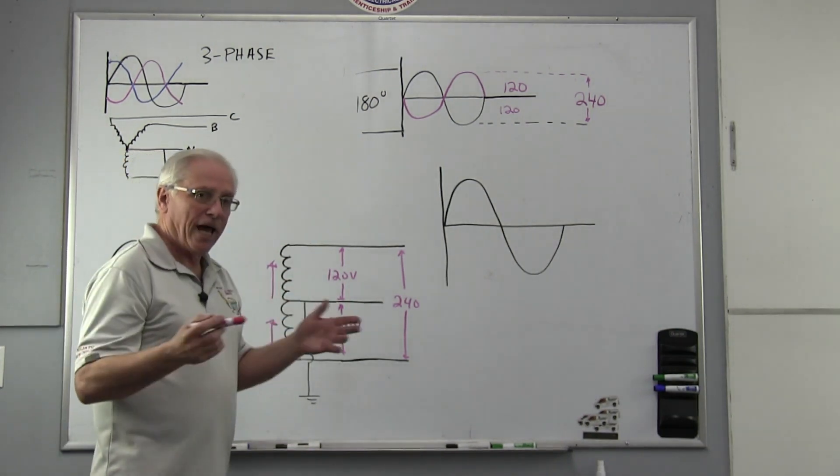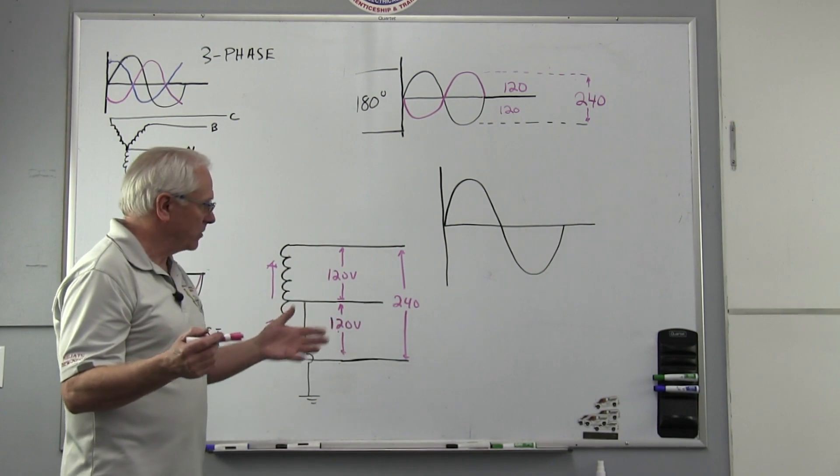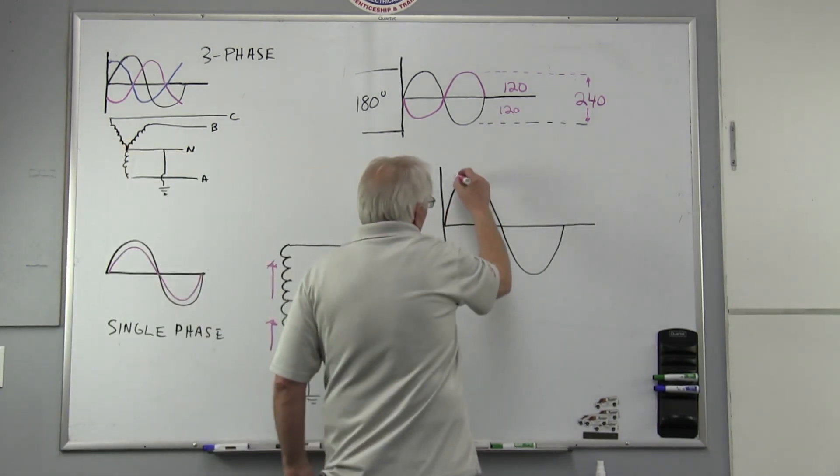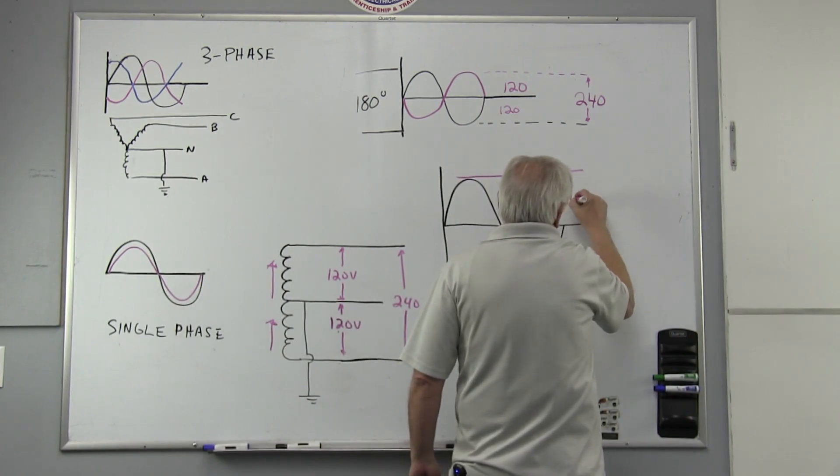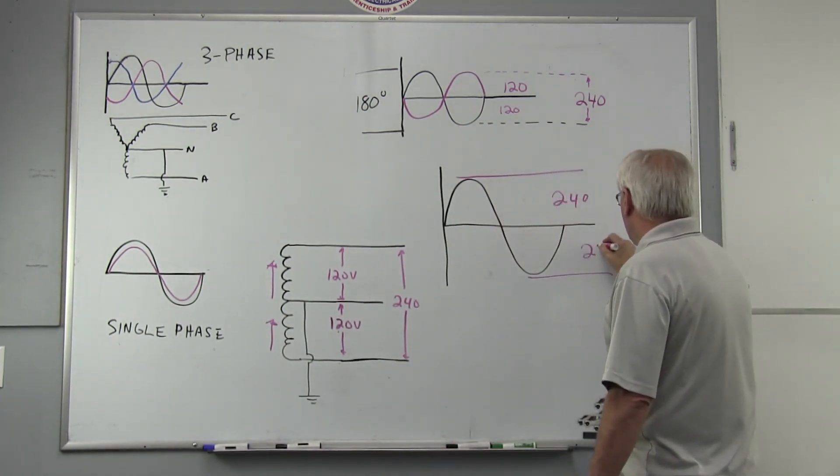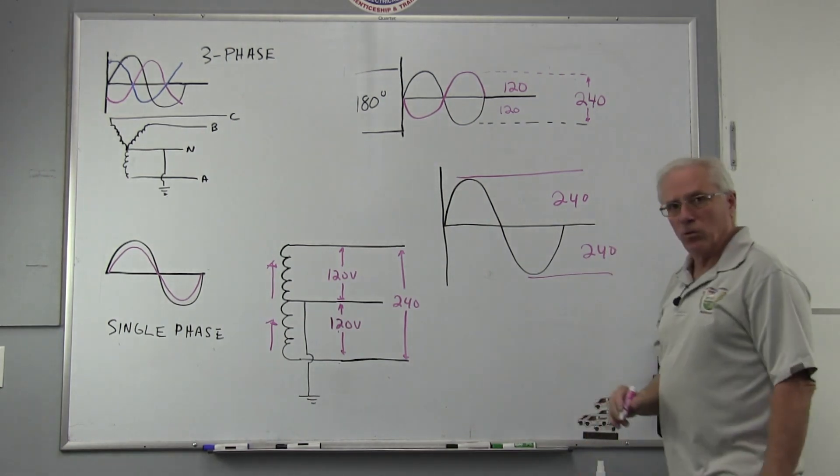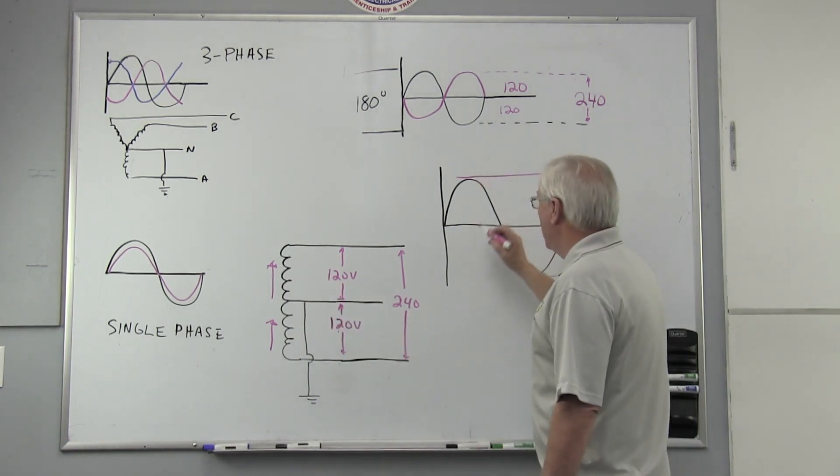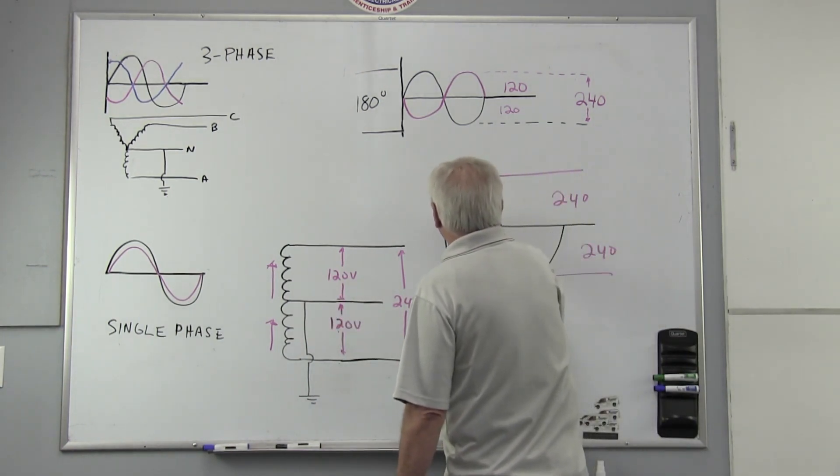I will show you what really happens in a single phase transformer. You really get this: you get 240 volts here on the positive side and 240 on the negative side. That really is what you get, and the 120 volts actually is half of it.